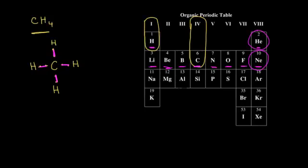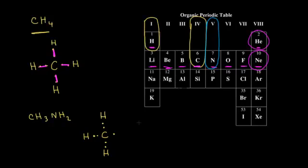Let's look at another dot structure — one that has nitrogen in it. Looking at the molecular formula CH₃NH₂, I'm going to once again start with carbon in the center with its four valence electrons around it. I know there are three hydrogens on that carbon, so I can go ahead and put in those three hydrogens, each with one valence electron. Then on the right side I think about nitrogen. Nitrogen is in group 5, therefore nitrogen has five valence electrons, represented as one, two, three, four, and five. I still have two hydrogens to worry about, and there's a place for them on the nitrogen, so I put a hydrogen here and a hydrogen here and connect the dots. And I have my dot structure.